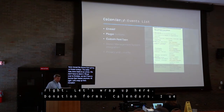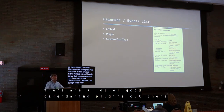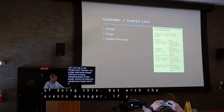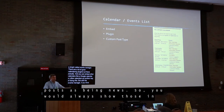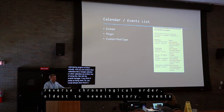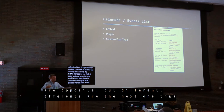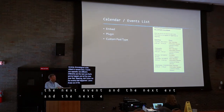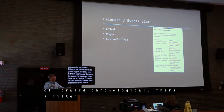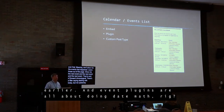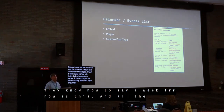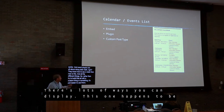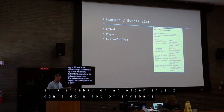Calendars — I use a plugin called Events Manager. There are a lot of good calendar plugins out there, and you can embed other calendars like Google Calendar. With Events Manager, posts are news shown in reverse chronological order, but events are different — you always want to show the next event happening and all the ones after that, not the ones that already happened. So they're forward chronological with a filter that says starting with today, not yesterday. Event plugins handle date math — they know how to say a week from now is this date — so rather than trying to build that in a custom way, it's easier to use theirs.